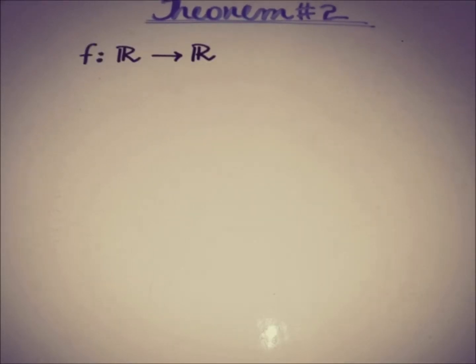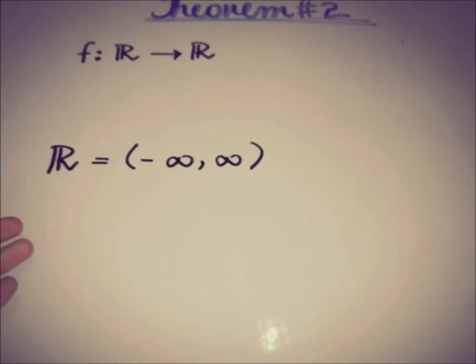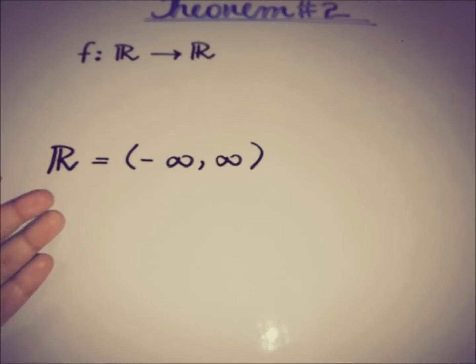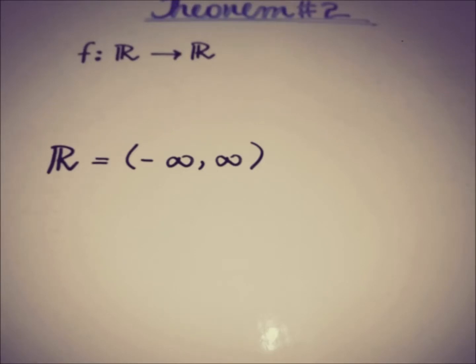The statement of the theorem involves a continuous function from the real line to the real line. A very important thing about the real line is that it is a connected space. We know ℝ goes from minus infinity to infinity, and there is no disconnection in ℝ — no two open subsets A and B whose intersection is empty and whose union is ℝ. Because of this structure, ℝ is a connected space.